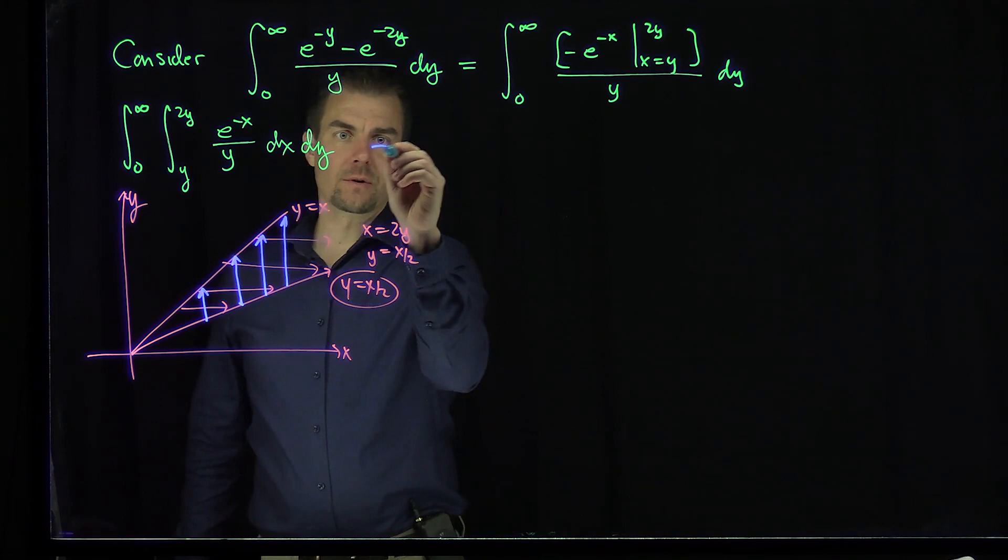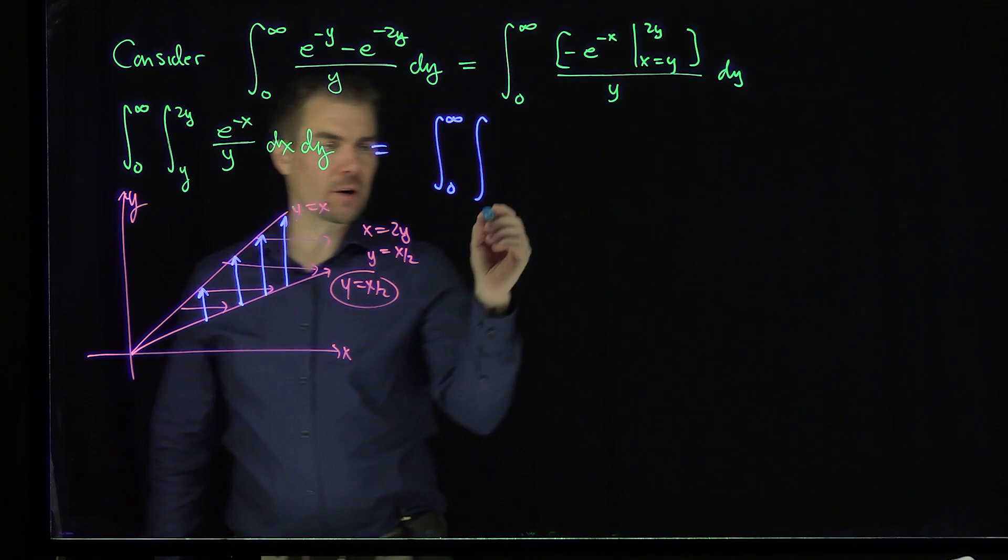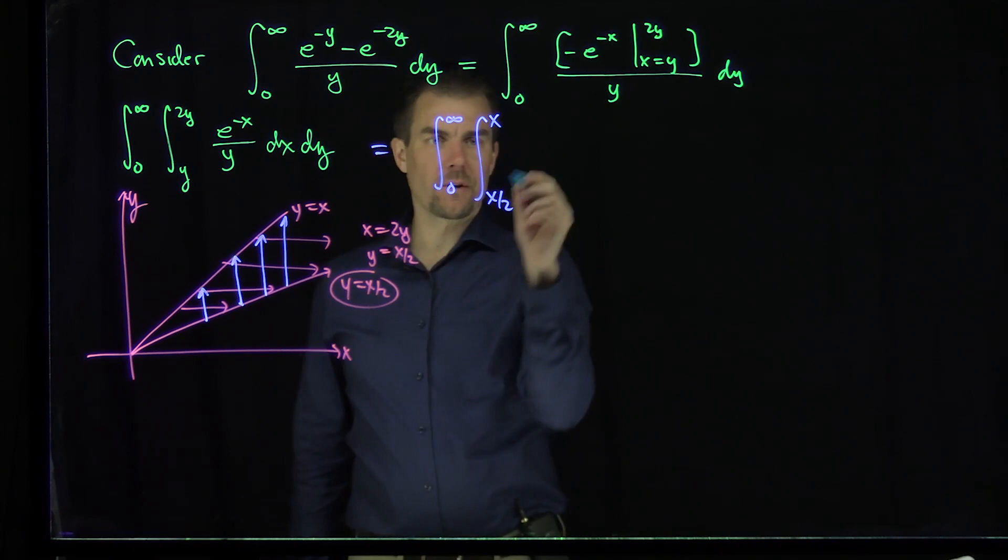And so if we do so, what does this become? In this case, my x is going to go between 0 and infinity. And what will my y go between? My y is going to go between this bottom curve, which is x/2, and the top curve, which is x.